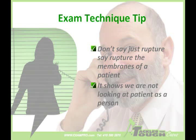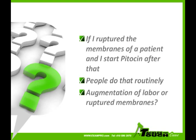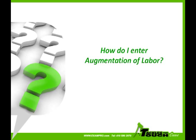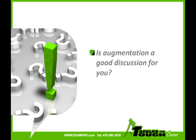So if I rupture the membranes of a patient, should I go ahead and just start Pitocin after that? It's pretty obvious that a lot of people just do that routinely. Can I just write that globally as augmentation of labor, as opposed to specifically writing rupture of membranes and then Pitocin augmentation? I'm guessing that a discussion on augmentation would be a good discussion for you — is that correct? So how can we word it so that that discussion is more likely to come up?